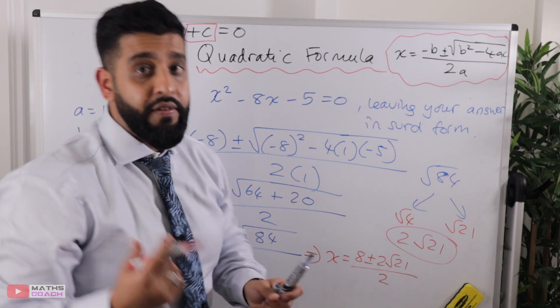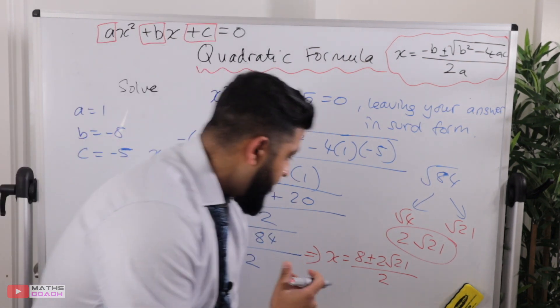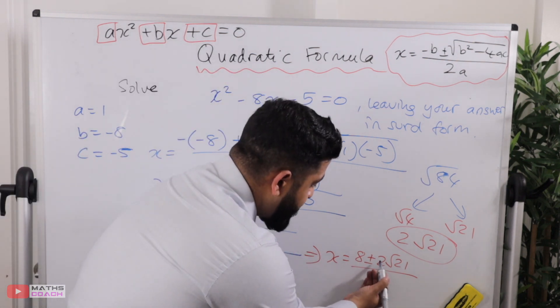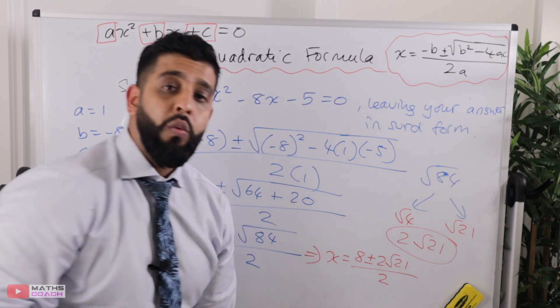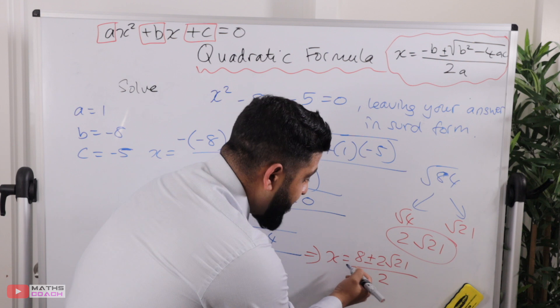The reason I've done this is because I can now look for common terms and something to cancel down with. See here, 8, 2, and 2, what do they all have in common? 2 goes into all of them, so I can divide this by 2, I can divide this by 2, and I can divide that by 2.